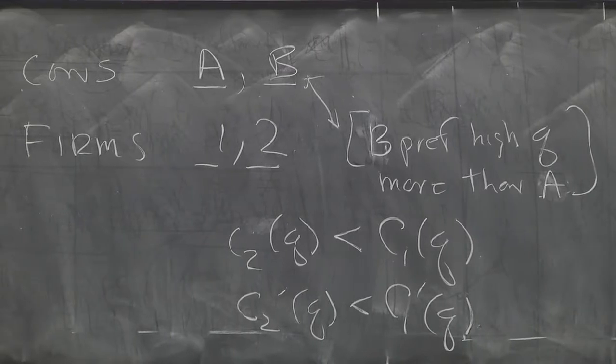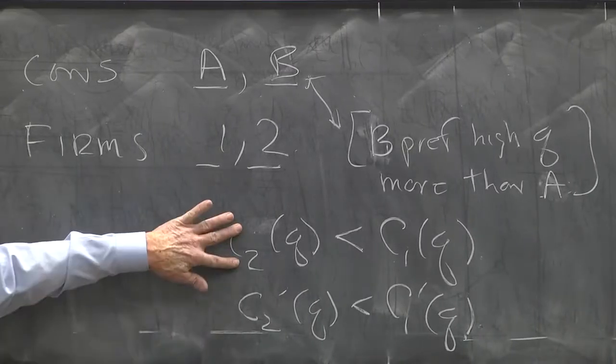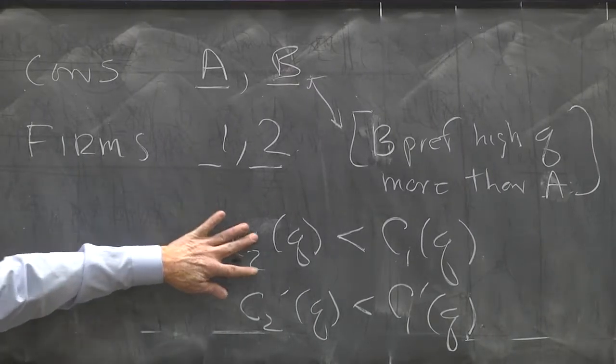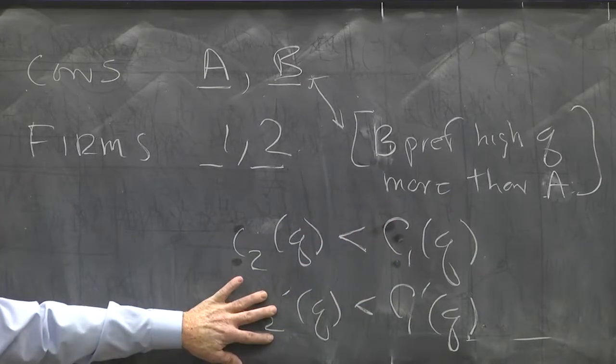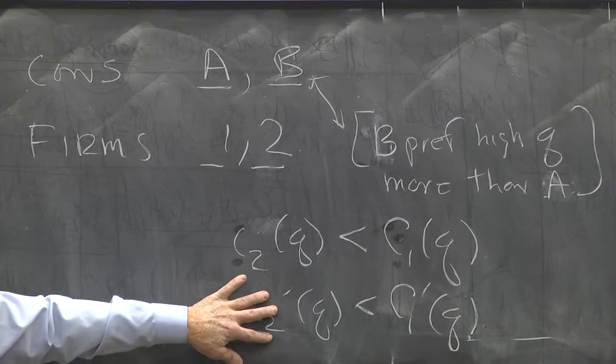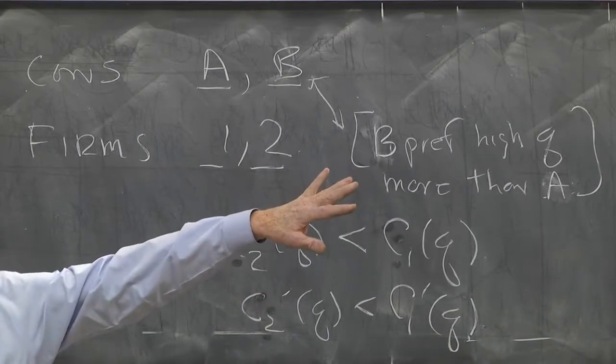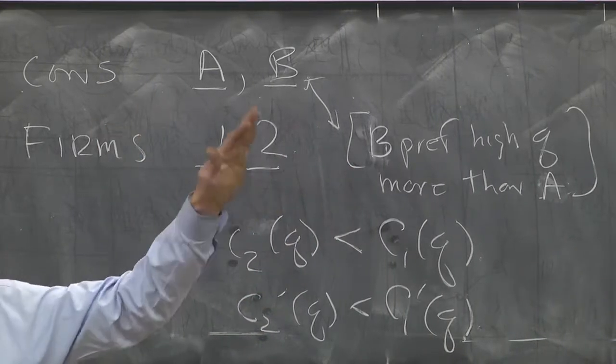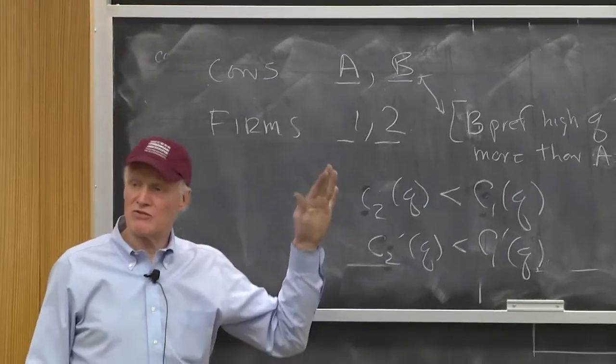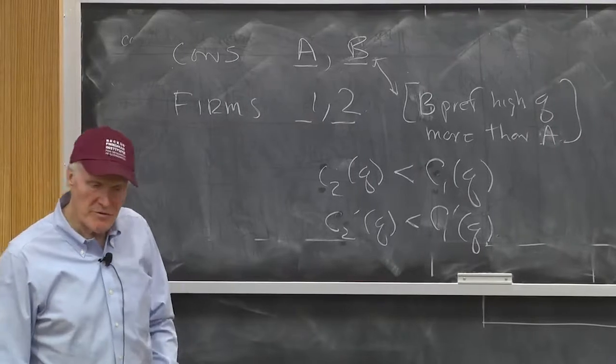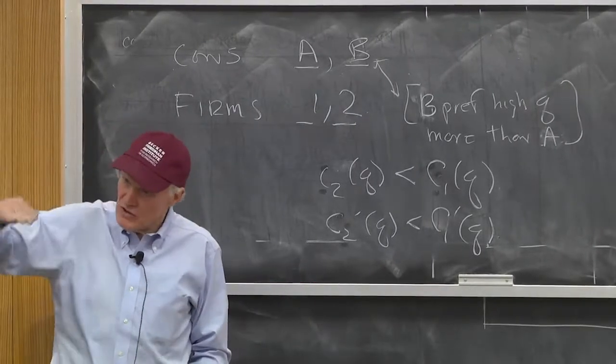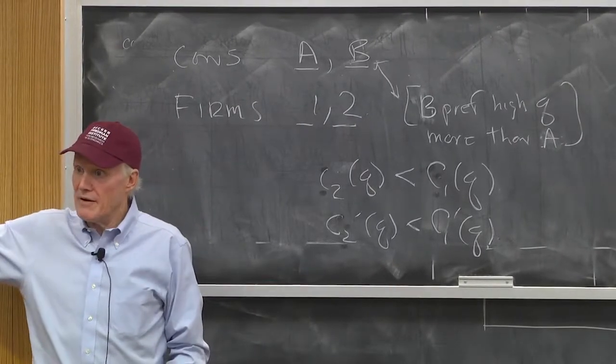So, the idea is type 2 firms have lower costs than type 1 firms for any given quality, and they have lower marginal costs, which is kind of the picture I drew over there. I sort of assumed the 2s were the low-cost firms, and they were also the firms that would produce higher quality. Everybody understand? So, the 2s cost curve is lower, but it's also flatter.